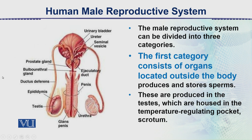Now let's talk about the male reproductive system and its different structures. It can be divided into three categories. The first category consists of organs which are located outside the body — the testes — and there is also the intermittent organ which we call the penis.